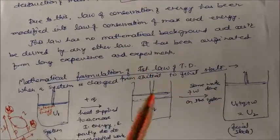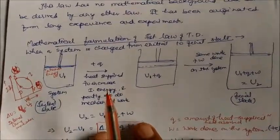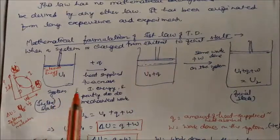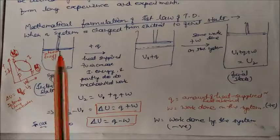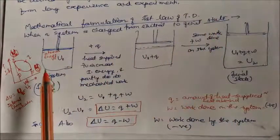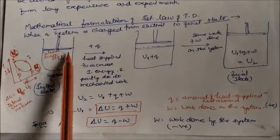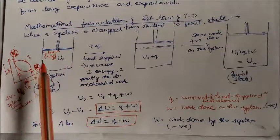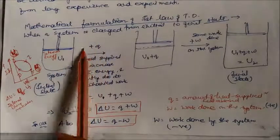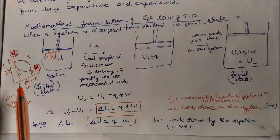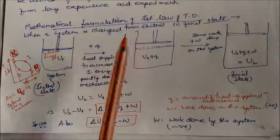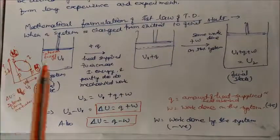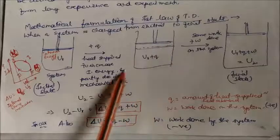Now we will see how to mathematically formulate the First Law of Thermodynamics. Consider a piston-cylinder system where gases have some initial internal energy U₁. When heat q is supplied to the system, the internal energy increases and the system does some work, causing the piston to move up — this is work done by the system.